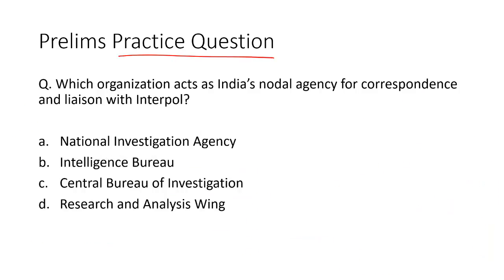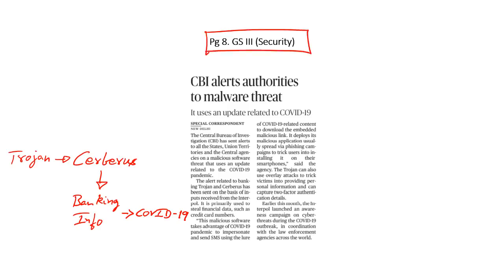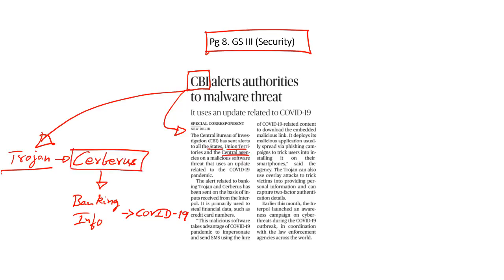Next practice question: Which organization acts as India's nodal agency for correspondence and liaison with Interpol? The correct answer is Option B — it is the Central Bureau of Investigation or CBI. These questions were asked because the CBI has notified all central agencies, state governments, and union territories regarding a Trojan malware called Cerebrus, designed to extract banking information by exploiting people's interest in COVID-19 content. This alert was issued by the CBI based on inputs from Interpol.